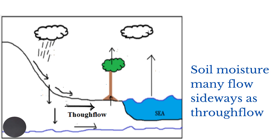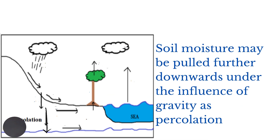Water which enters the soil forms the soil moisture storage. This soil moisture may flow sideways through the soil as through flow. Soil moisture may also be pulled further downwards into the ground under the influence of gravity in the process of percolation.